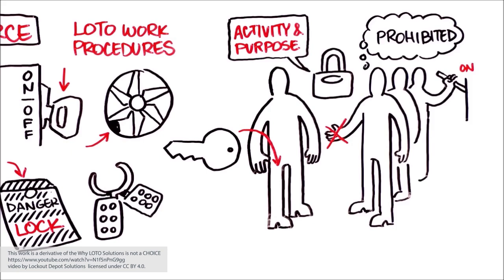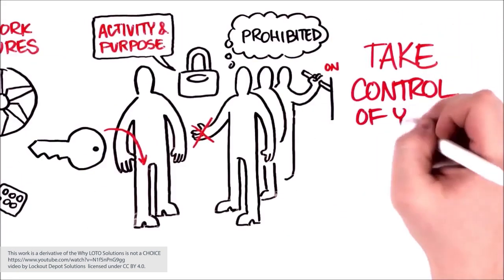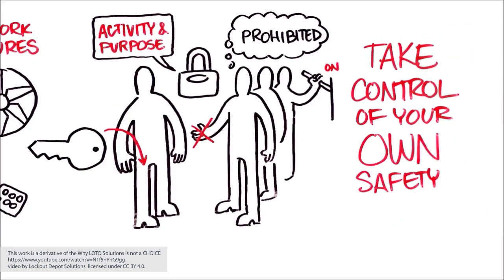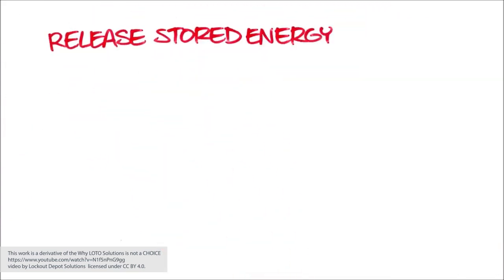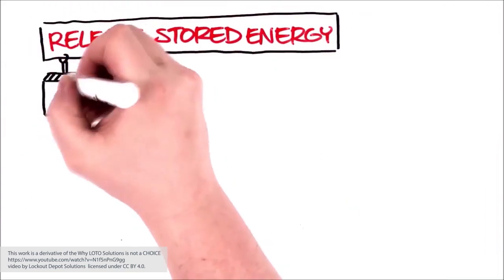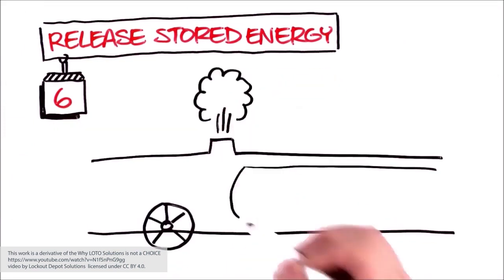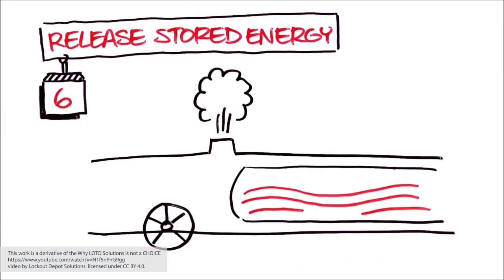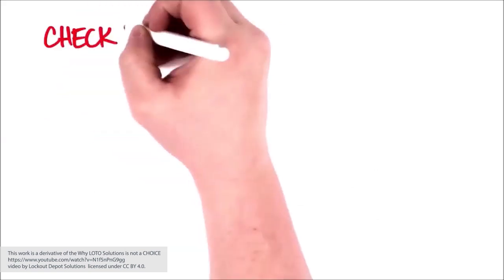Applying your lock communicates your activity and purpose, plus you place a physical barrier against reactivation of the equipment. You take control of your own safety. Then it's time to release stored energy, which can also cause injury. This can be accomplished by bleeding air pressure or neutralizing residual chemicals. This step is important.